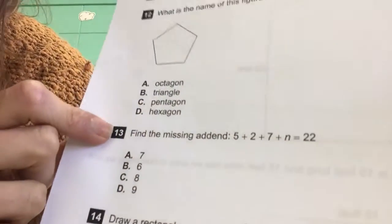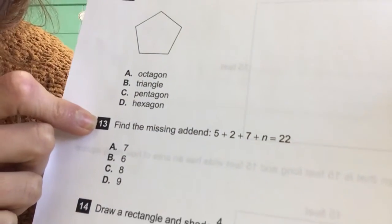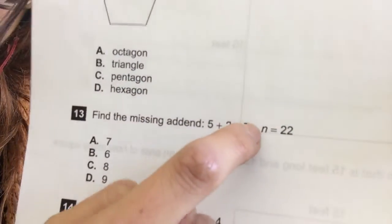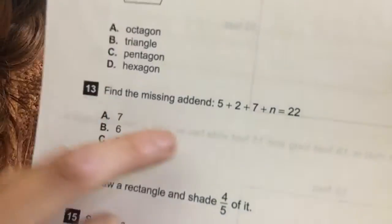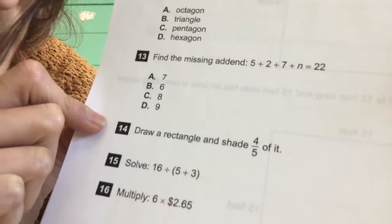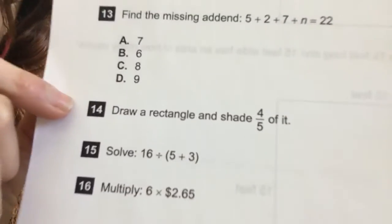Okay, number thirteen. Find the missing addend. Five plus seven plus n equals twenty-two. You need to find that missing number. Okay, that number in there should equal twenty-two. All right, fourteen. Draw a rectangle and shade four-fifths of it. So you want to draw your rectangle over here.